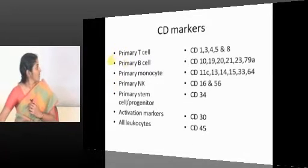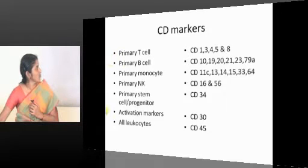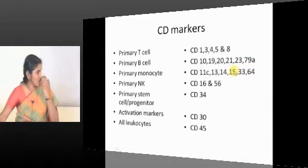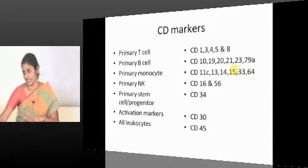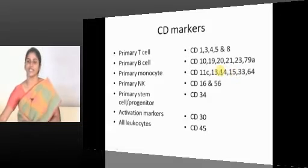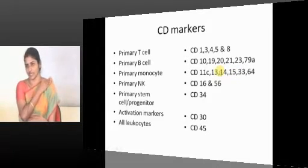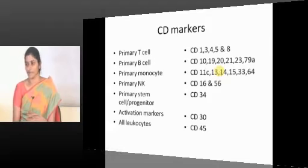Regarding CD10, and moving to monocyte markers, remember 11, 3, 13, 33, 14, 15, and all like for myeloid units. CD13 and CD33 are the primary monocytic markers.